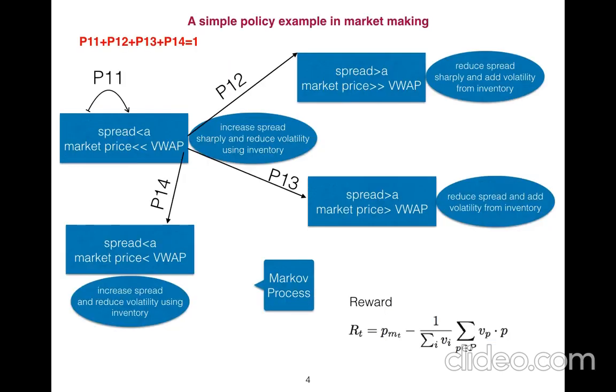So this is just an example. We have four states in a Markov process. I mean, it is independent of your previous moves in the game. So in our four states, for example, in one state, states are in rectangular, spread is greater than A or market price is very much greater than volume weighted average price.